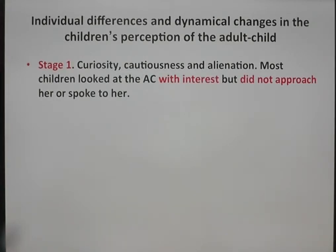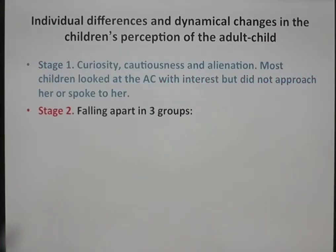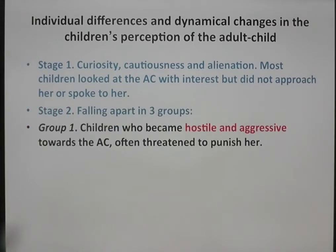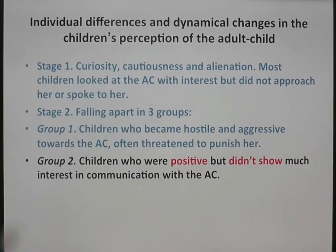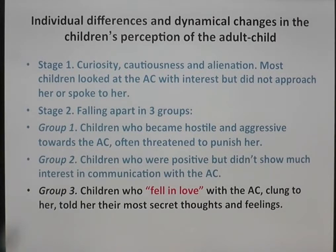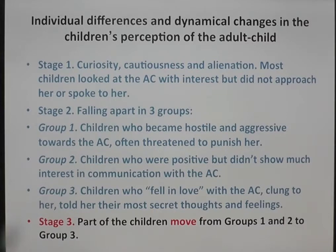Individual differences and dynamical changes in the children's perception of the adult child were also observed. In stage one, curiosity, cautiousness, and alienation were noted — most children looked at the adult child with interest but did not approach or speak to her. In stage two, children fell apart into three groups: group one became hostile and aggressive, often threatening to punish the adult child; group two were positive but showed little interest in communicating with her; and group three fell in love with the adult child, clung to her, and told her their most secret thoughts and feelings. In stage three, part of the children moved from groups one and two to group three.